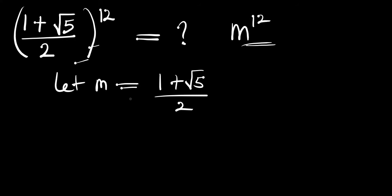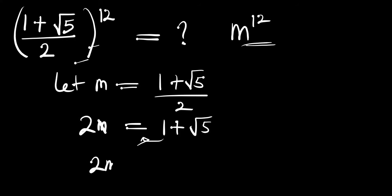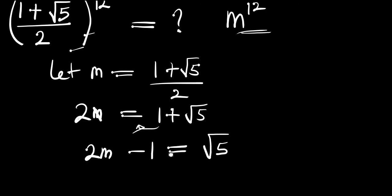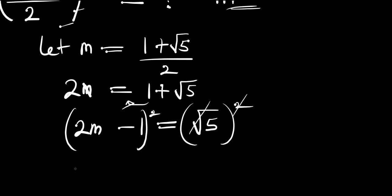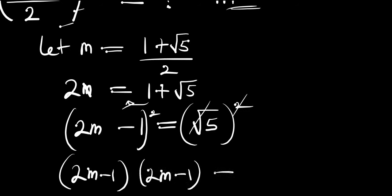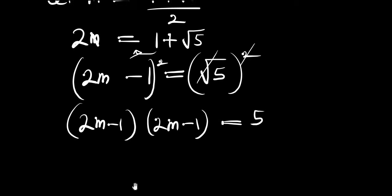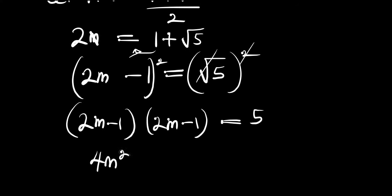From here we can cross multiply: we have 2m equals 1 plus root of 5. Moving the 1 over, we have 2m minus 1 equals root of 5. To eliminate this square root we square both sides, so 2m minus 1 squared equals 5. Multiplying out gives us 4m squared minus 4m plus 1 equals 5.